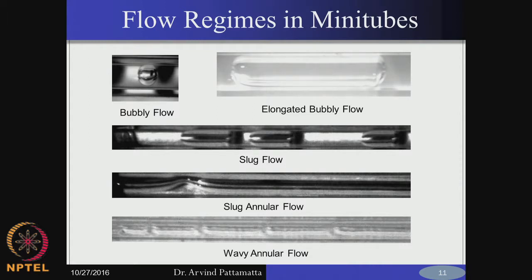In this case you will encounter mostly elongated bubbles. You have a single bubble which is nucleating and it can grow, but unlike in macro tubes, these bubbles will quickly reach the size of the diameter of the tube and then they cannot grow further in the cross-sectional area. They will only expand along the length of the tube. So mostly you will be dealing with elongated bubbly flow, also called slug flow.